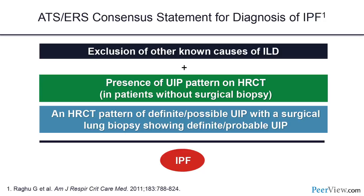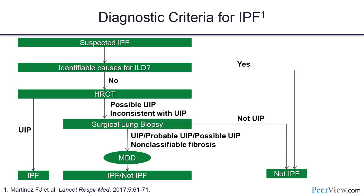Once you've excluded other causes, it comes down to finding the pattern we call usual interstitial pneumonia — either radiographically on high-resolution CT, or when the CT is subtle or mild, under the microscope via surgical lung biopsy. Idiopathic UIP is what we call IPF. Using a flow chart: you start with a suspected ILD patient and ask, can you find a cause?